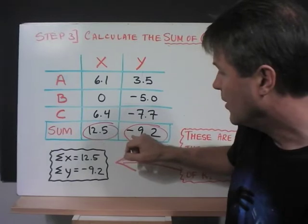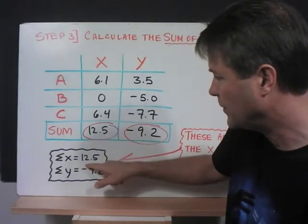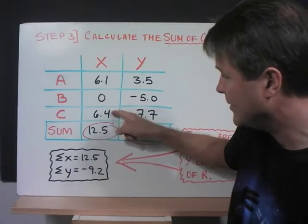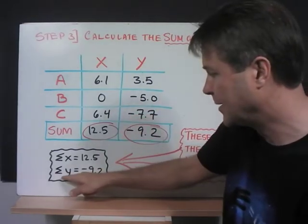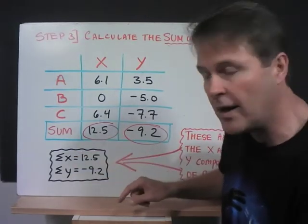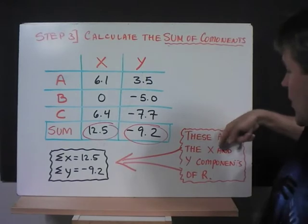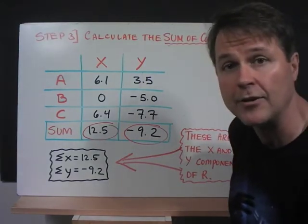So these are the sum of the X's. Sum of the X is 12.5, all the X's added together. And all of the Y's added together is the sum of the Y's. Now the sum of the X and sum of the Y's, these are the X and Y components of R. We're trying to find out the value of R.